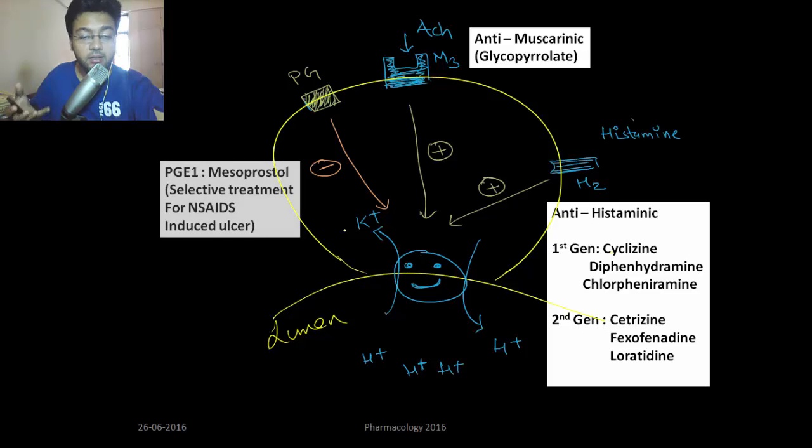When you give NSAIDs, what are NSAIDs? These decrease the prostaglandin production. NSAIDs decrease prostaglandin production, so you'll have more acid. So selective treatment for NSAID-induced ulcer is giving prostaglandin analog.